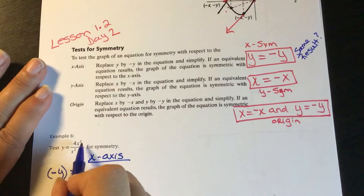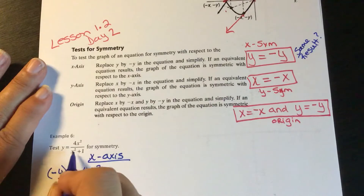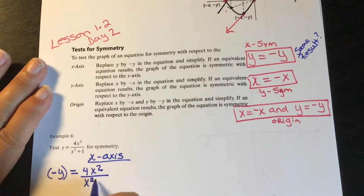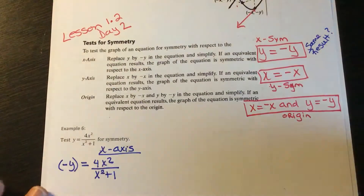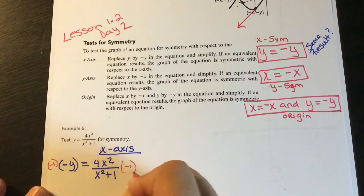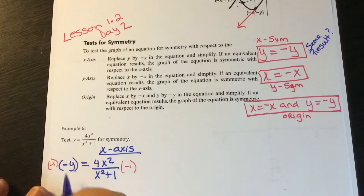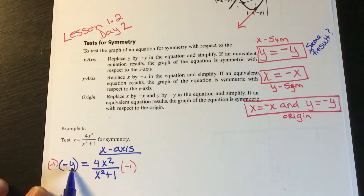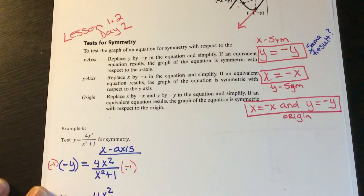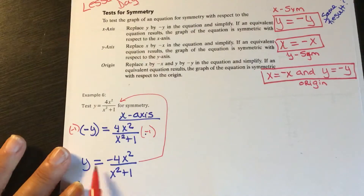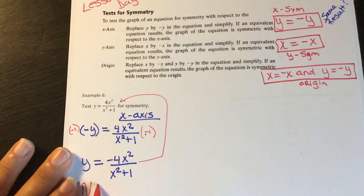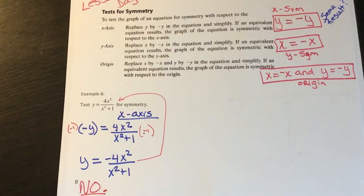Does that equal 4x squared over x squared plus 1? So now I'm just going to solve for y. To do that, I'm going to multiply both sides by negative 1. When I do that, I end up with y equals — because I want to get y by itself — negative 4x squared over x squared plus 1. So it's asking us: are these two equations the same? And they are not the same. So no, we don't have symmetry over the x-axis.